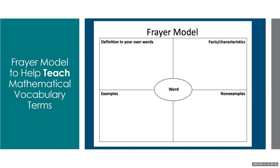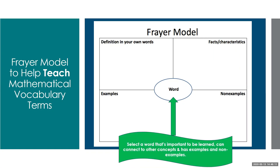A Frayer Model is used to help teach mathematical vocabulary terms — it's not a worksheet. Initial instruction about the Frayer Model is really heavily adult-directed and requires adults and teachers to model it. We would want to show students how to complete this graphic organizer by talking through what we're doing and how we come up with information for the different sections, using textbooks and other subject materials. First, we pick our word or term that's important to be learned, that we can connect to other concepts, and that has some examples and non-examples.